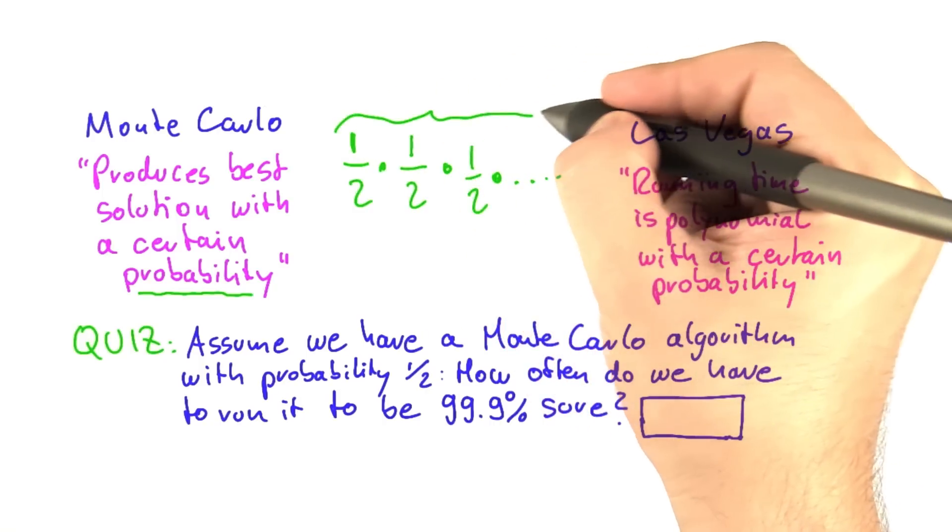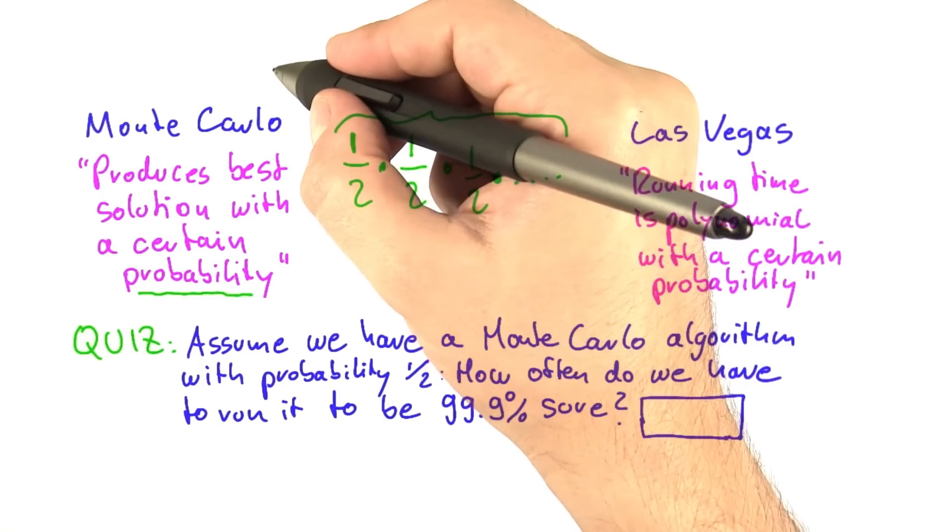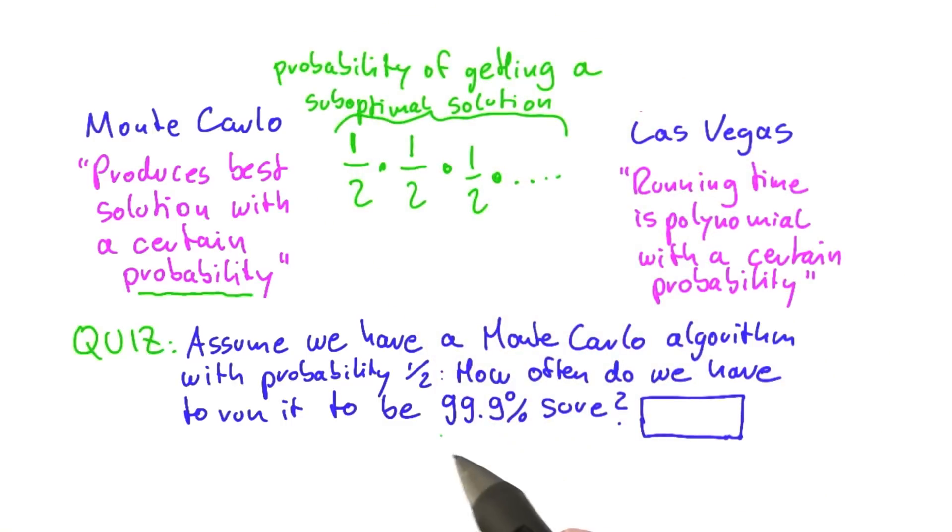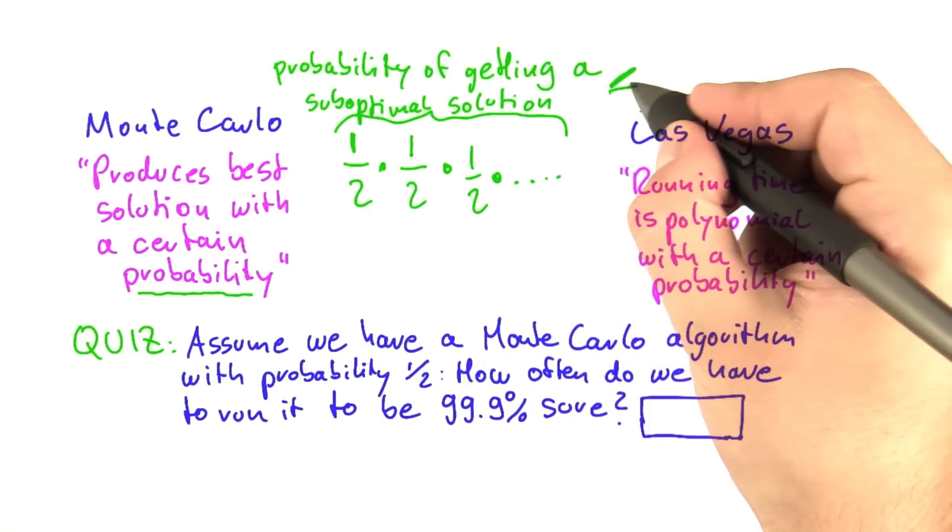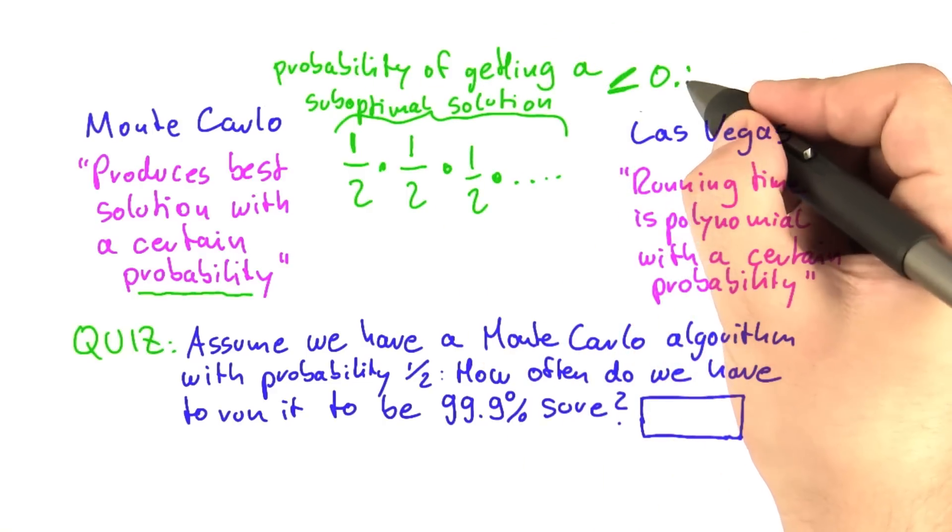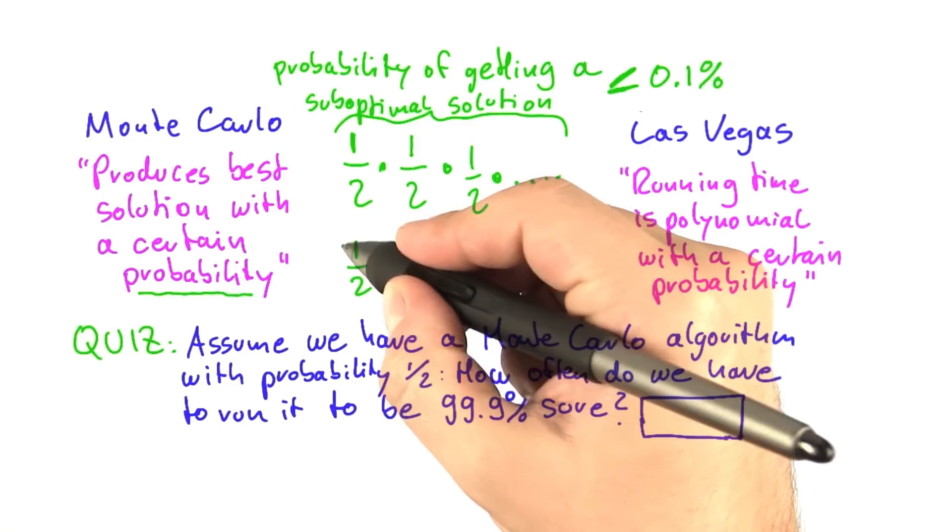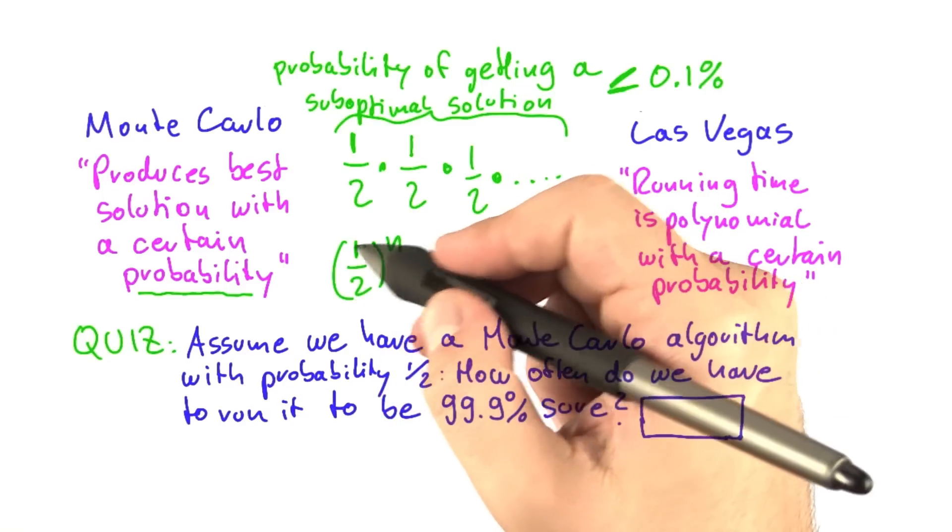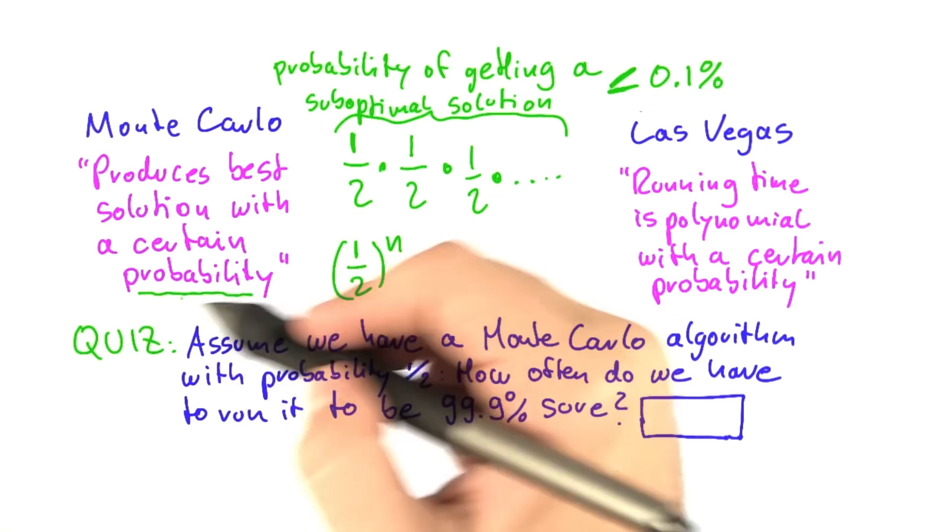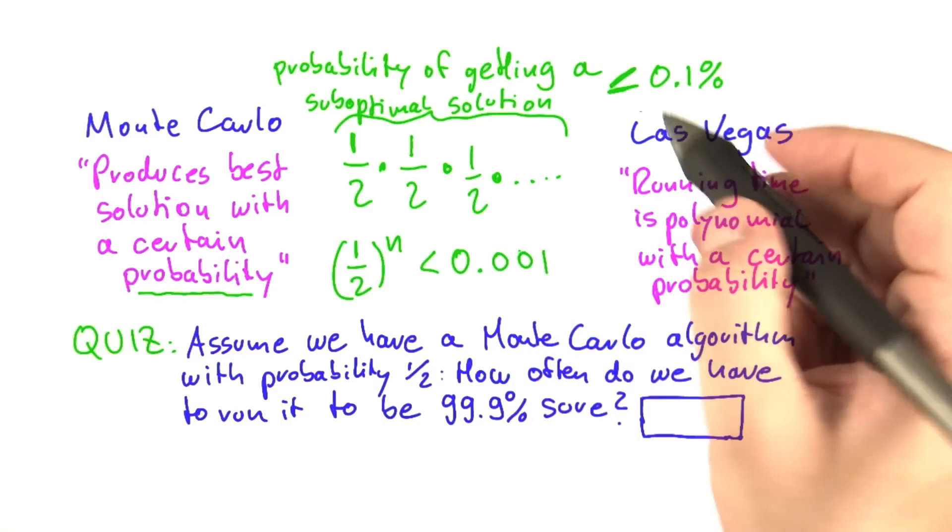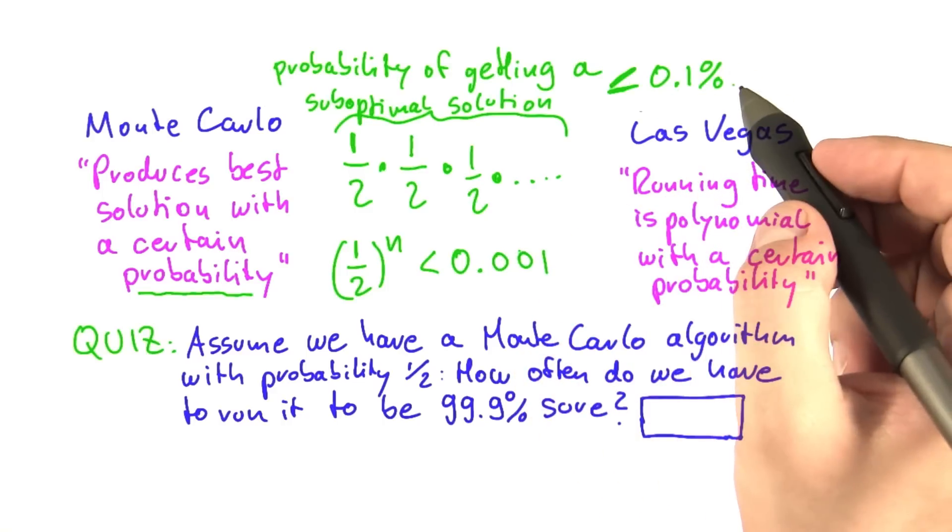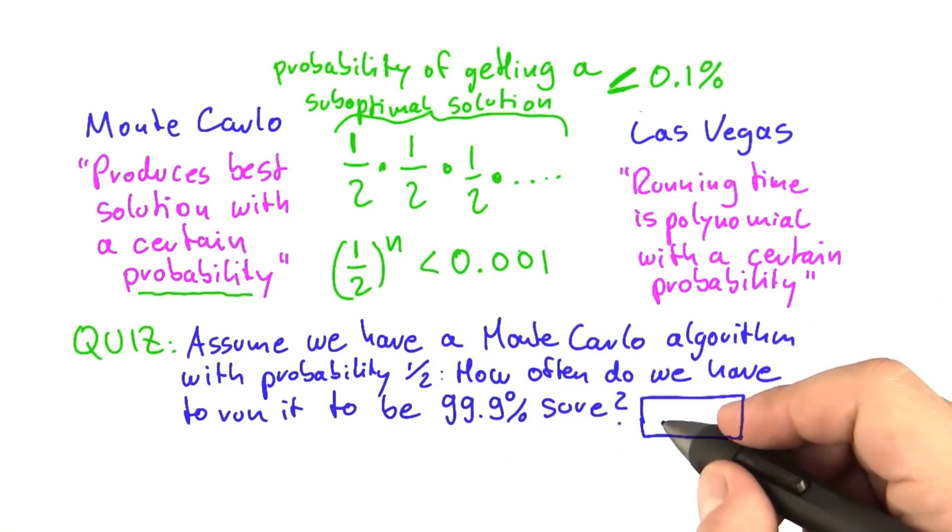Now this is the probability of getting a suboptimal solution. And of course, if we want to be 99.9% sure that we get the best possible solution, the probability of getting a suboptimal solution should be smaller than 0.1%. And then the problem becomes 1 half over n, and n is the number of times that we run this algorithm, should be smaller than 0.001, which is the same as 0.1%. And then you can just solve for n and get the answer.